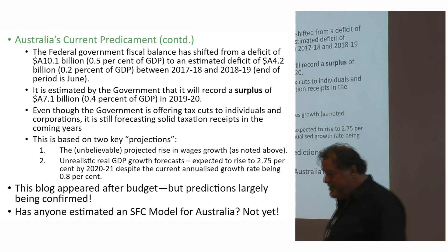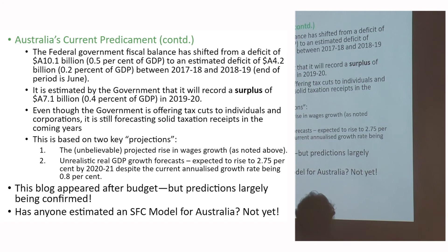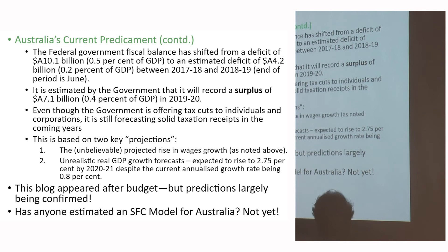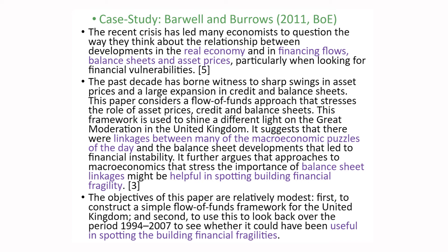The budget was based on some really dodgy projections — an unbelievable projected rise in wage growth, with the Reserve Bank saying wages ought to increase but talking to deaf ears. The blog analysis appeared after the budget and predictions have largely been confirmed. A frustration is that PhD students have done SFC modelling for Bangladesh, Pakistan, and the GFC in America, but no one has yet estimated an Australian SFC model.